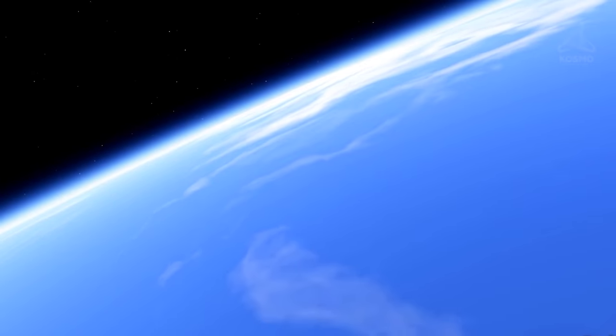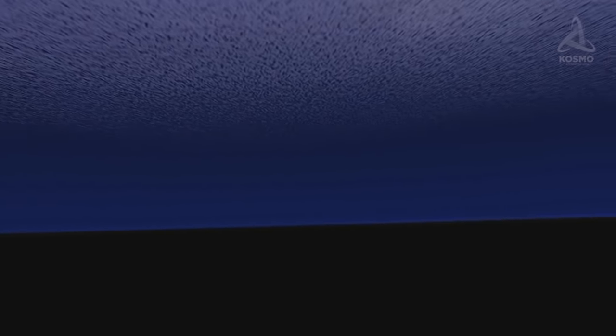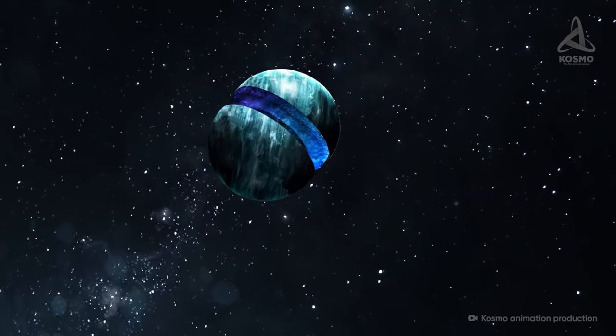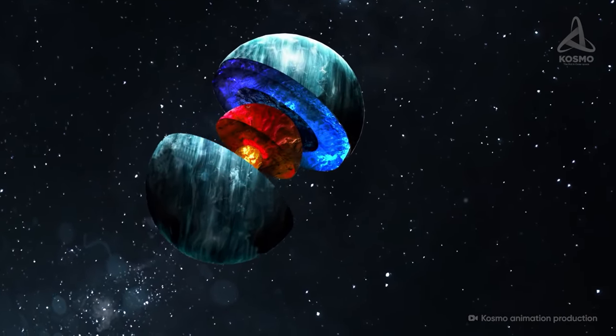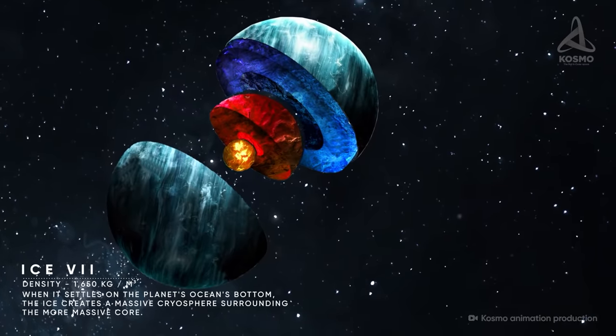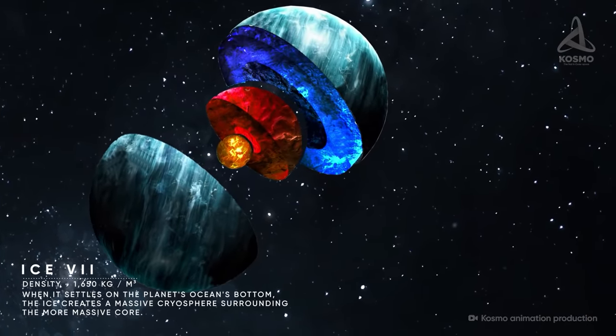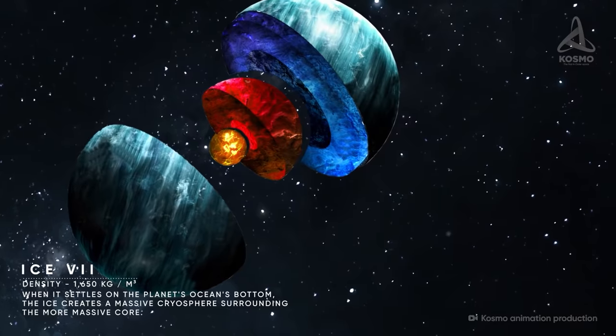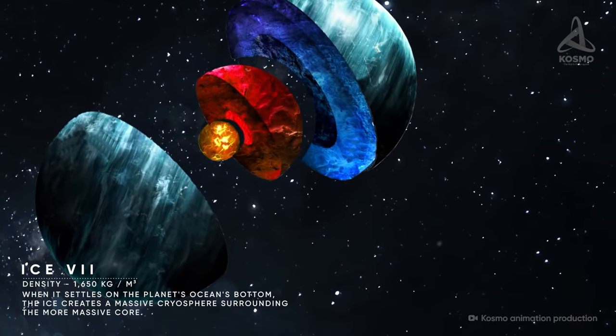Theoretical calculations show that a planet with a mass six to eight times that of the Earth may have a layer of water over a hundred kilometers thick. The pressure exerted by this amount of water may reach 20,000 atmospheres, depending on temperature, impurities and other parameters. This is enough for some special exotic varieties of ice to form, like ones remaining solid even at high temperatures. In addition, unlike the familiar water ice, these modifications would be heavier than liquid water. For example, the density of ice 7, which is likely to form in these conditions, should be around 1650 kilos per cubic meter. This ice settles on the planet's ocean's bottom and forms a massive cryosphere that envelops the more massive core.